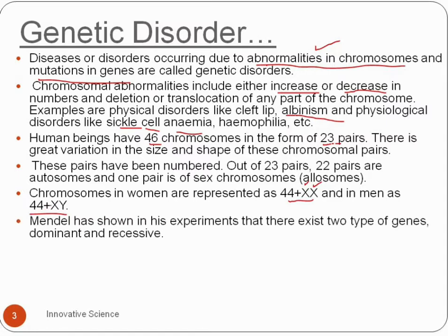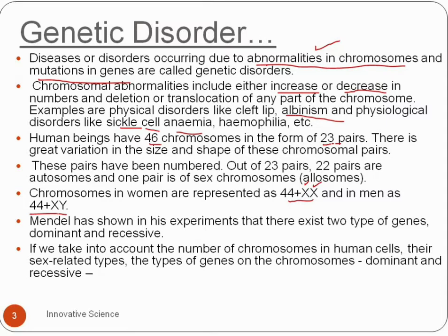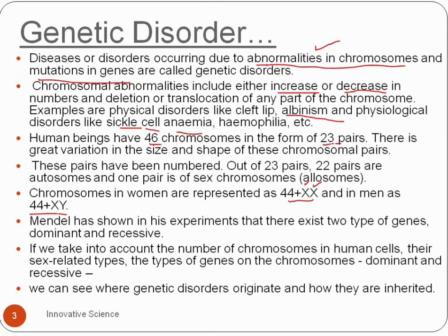In a human cell, considering the number of chromosomes, their sex-related type, and the type of genes on a chromosome, there are two types of genes: dominant and recessive. Mendel showed in his experiment that there exist two types of genes — dominant and recessive. We can see where genetic disorders originate and how they are inherited.